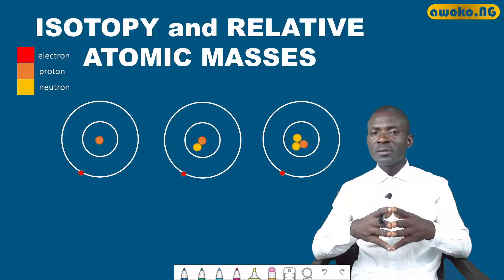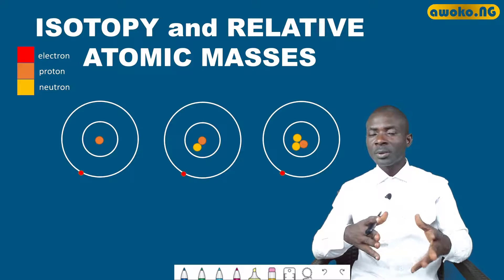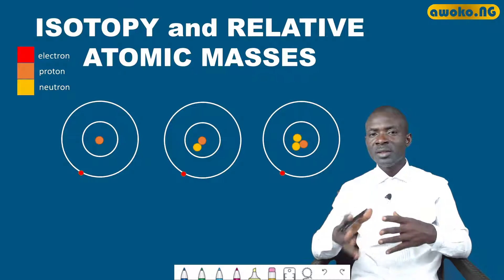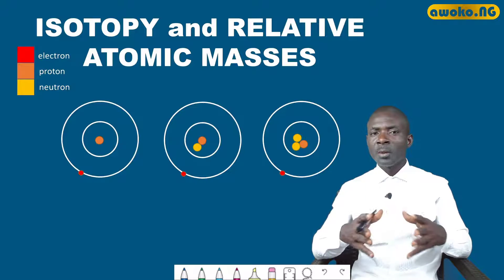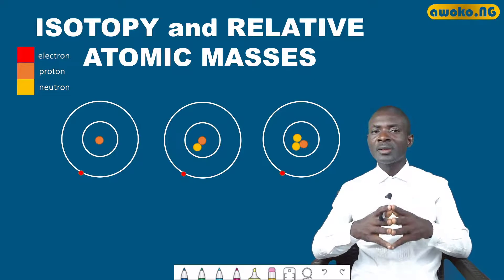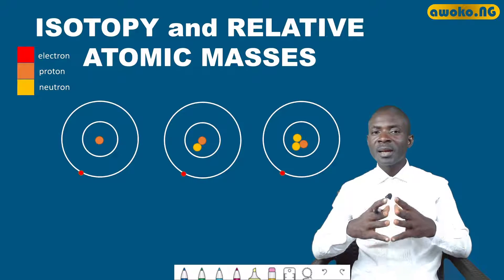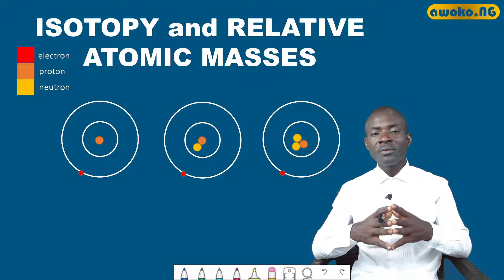The nucleus of an atom consists of protons and neutrons, while the electrons are revolving around the atom in an orbital manner.